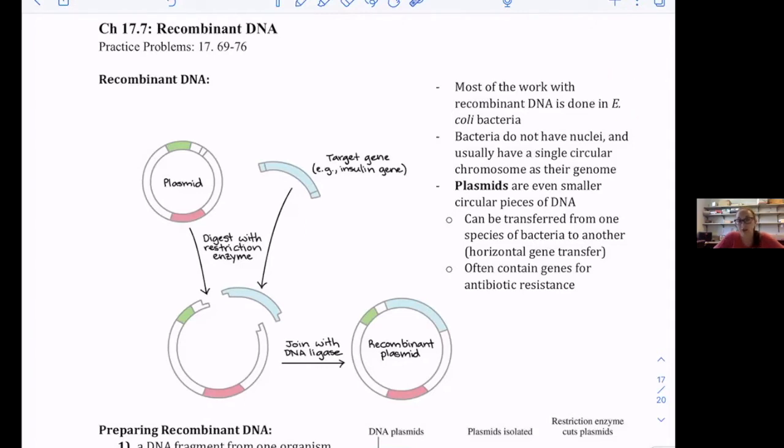E. coli is a bacteria, and bacteria do not have nuclei. They usually have a singular circular chromosome in their genome. We have X-shaped chromosomes, but bacteria just have a circular chromosome.